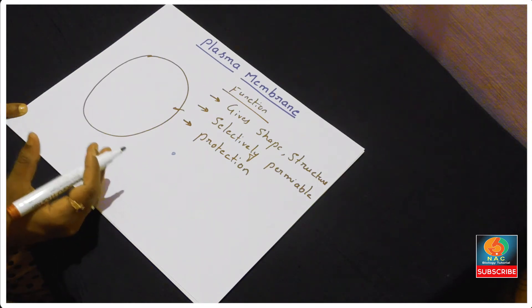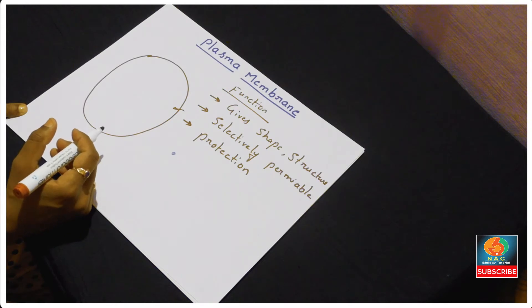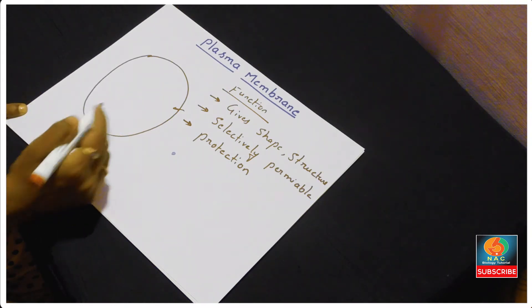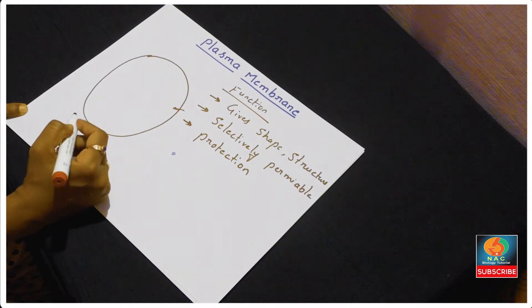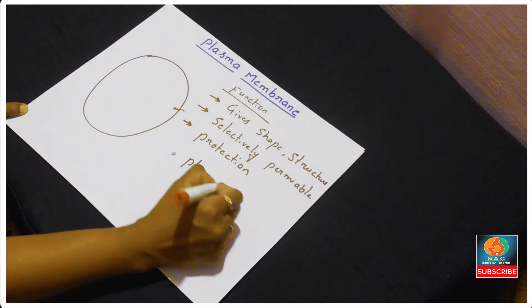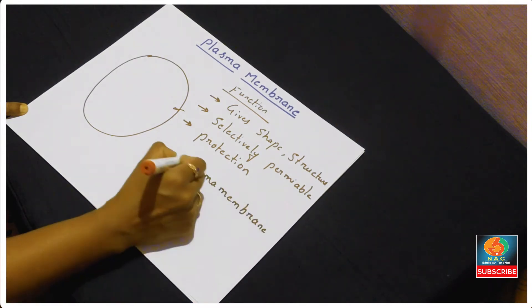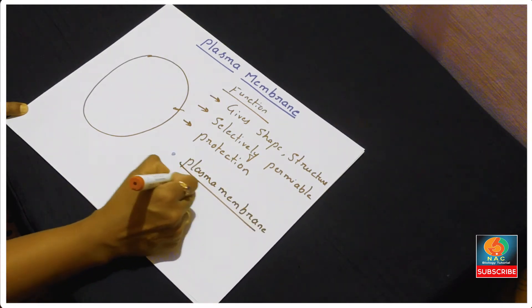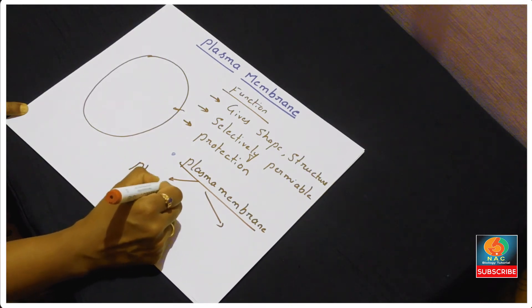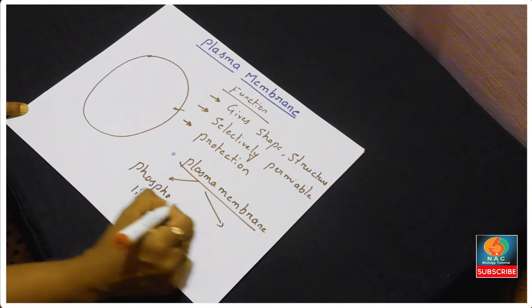I will do a separate video on material transport in an upcoming session. Now we will talk only about the structure of the plasma membrane. The plasma membrane is made up of two substances: phospholipids as well as proteins.